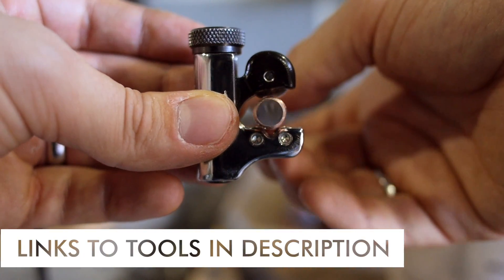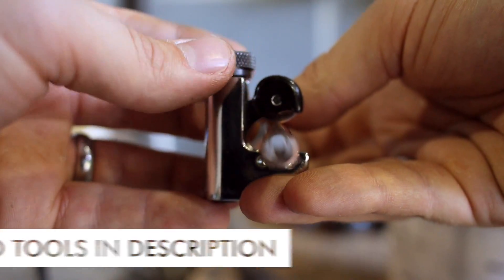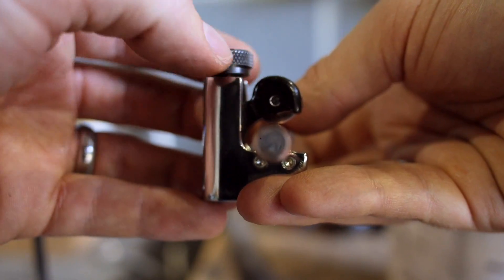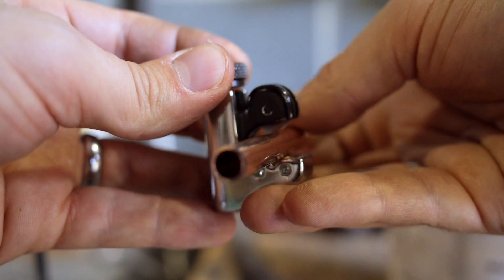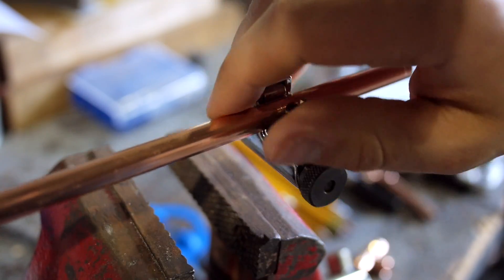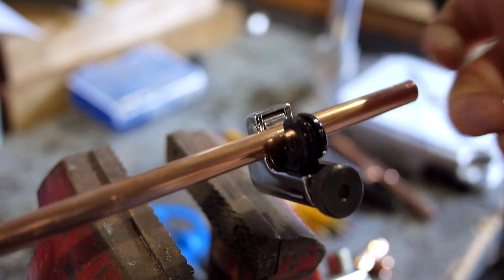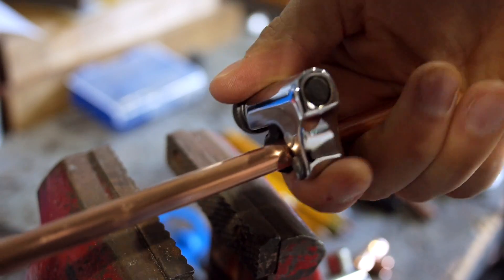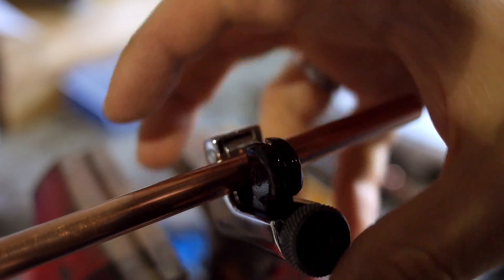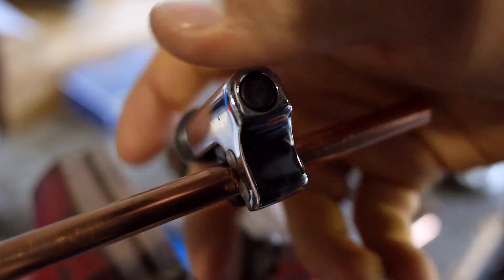The first step is to cut your copper pipe to length. You can use a simple tubing cutter such as this one, or if you have a bigger pipe, a larger one. Once you clamp it down around the pipe, you rotate it around, clamp it a tiny bit tighter, rotate it around again a few times, and keep clamping and rotating until the pipe just falls off in your hand.